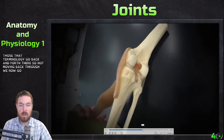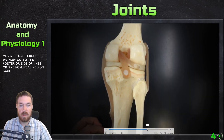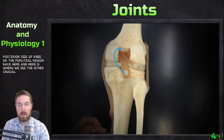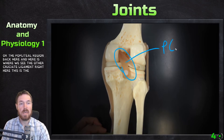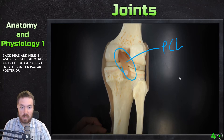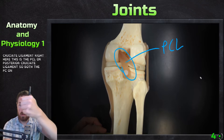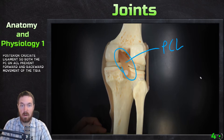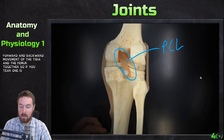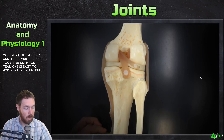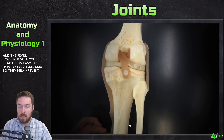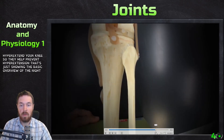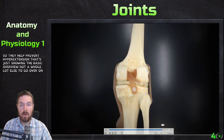Moving to the posterior side of the knee — the popliteal region — we find the other cruciate ligament: the PCL, or posterior cruciate ligament. Both the PCL and ACL prevent forward and backward movement of the tibia and femur together. If you tear one, it becomes easy to hyperextend the knee, as these ligaments help prevent hyperextension.